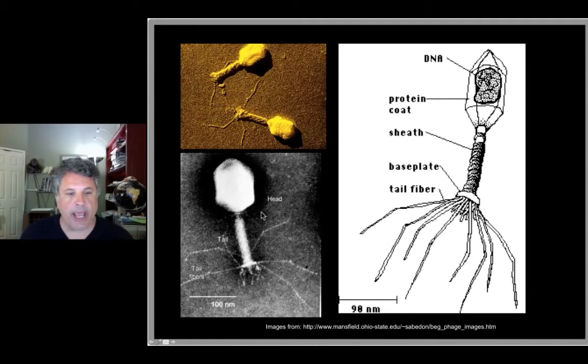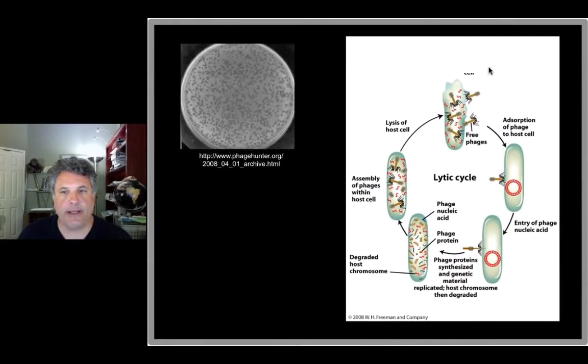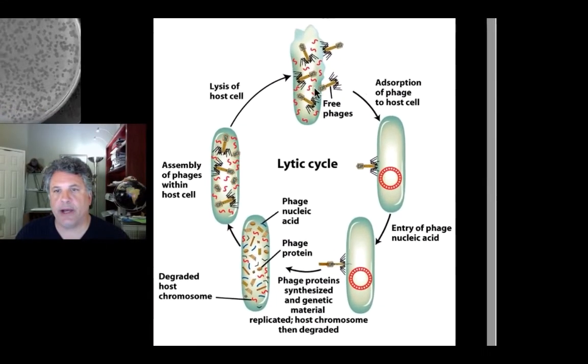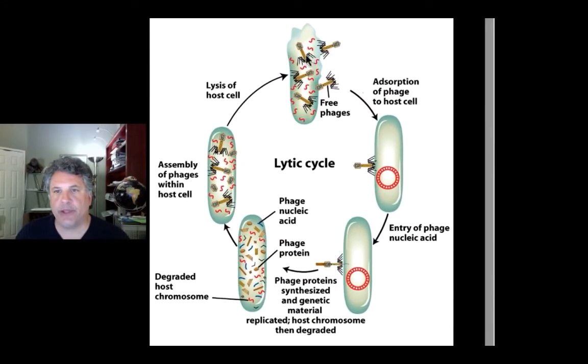Phage attach to the outside of bacteria and inject their DNA into the interior of the cell. That DNA then subverts the host machinery so as to produce replicas of the phage. We have transcription of the phage genes which encode the various phage proteins and those proteins and replicated DNA ensues through this cycle that we call the lytic cycle because it's going to result in the lysis of the bacterium.